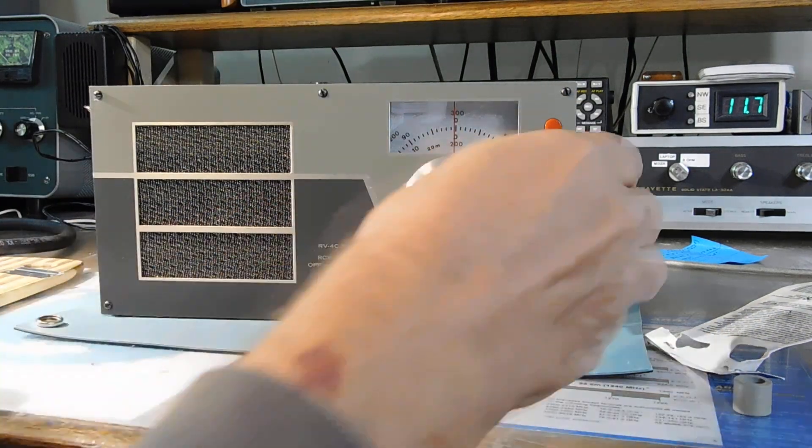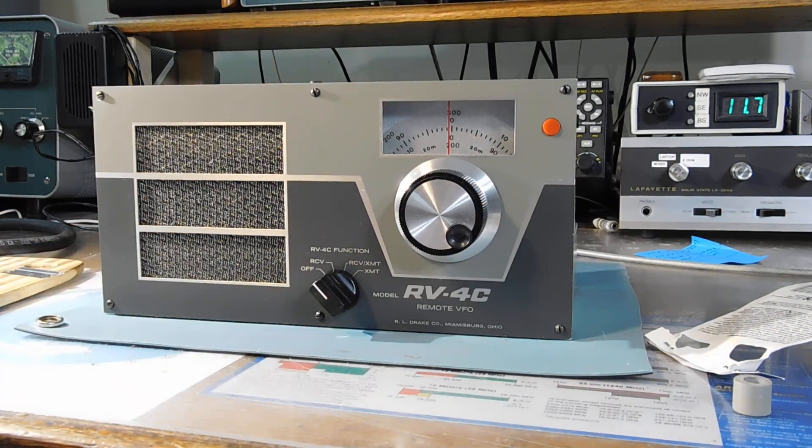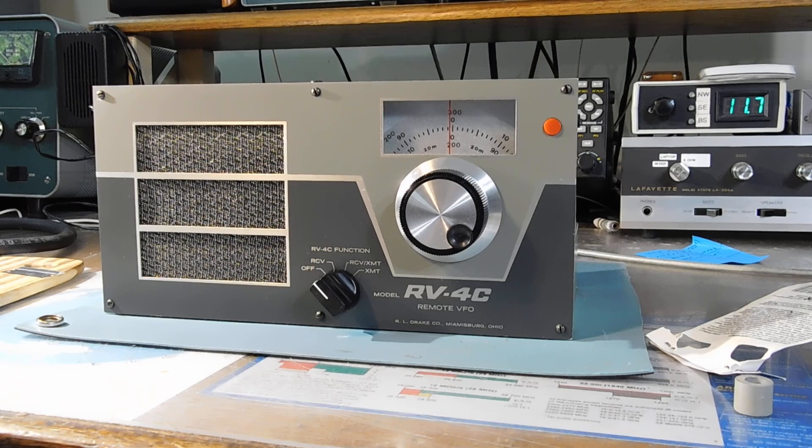So for very little money and a little rubber tubing, you can take care of the TR-4C, the B line, the C line, TR-6, TR-7—this happens to be an RV-4. Any one of the Drakes that use this slip system for the PTO calibration, you're going to run into these dried out, hard as nails bushings.